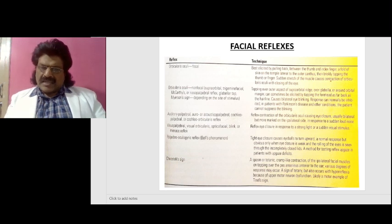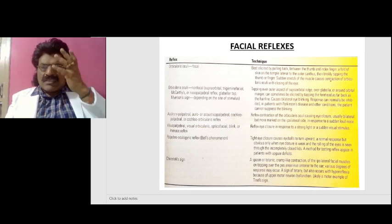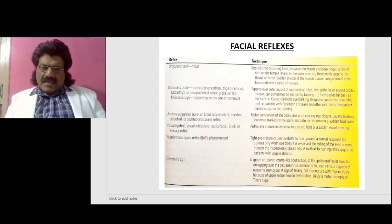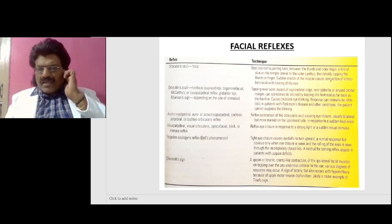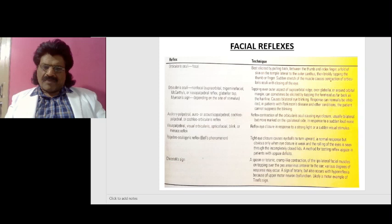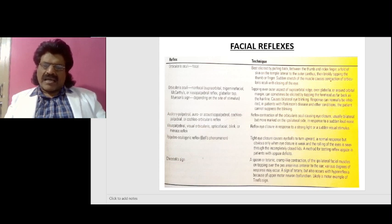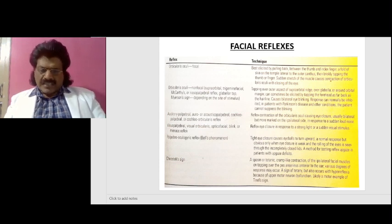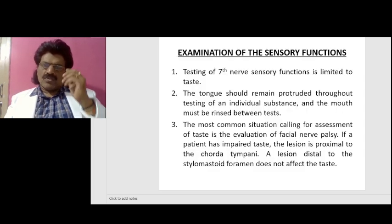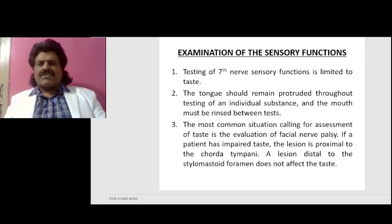The Chvostek sign: a spasm or tetanic cramp-like contracture of the ipsilateral facial muscles on tapping over the pes anserinus anterior to the ear. Various degrees of responses may occur. It is a sign of tetany but also occurs with hyperreflexia due to upper motor neuron dysfunction. These are the various facial reflexes which can be elicited, completing the examination of the motor functions.